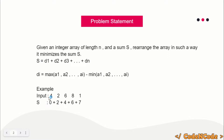For example, if the input was this, S would be zero because maximum minus minimum would be zero. When i equals 2, these two elements are present, so max is 4, min is 2, so 4 minus 2 is 2, and so on. So S would be this value for this configuration.